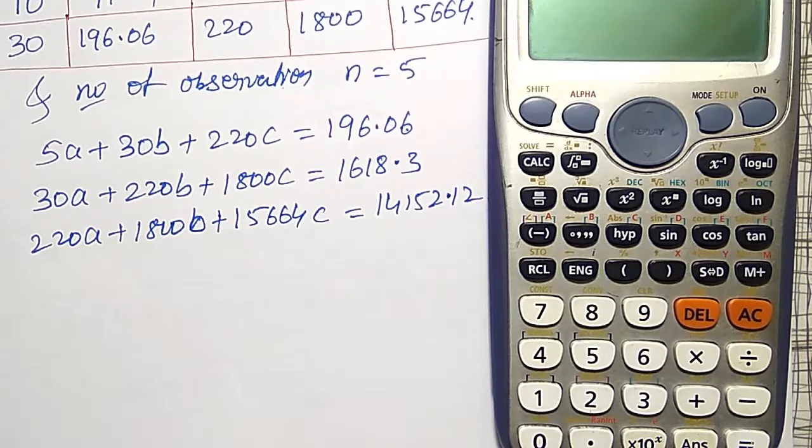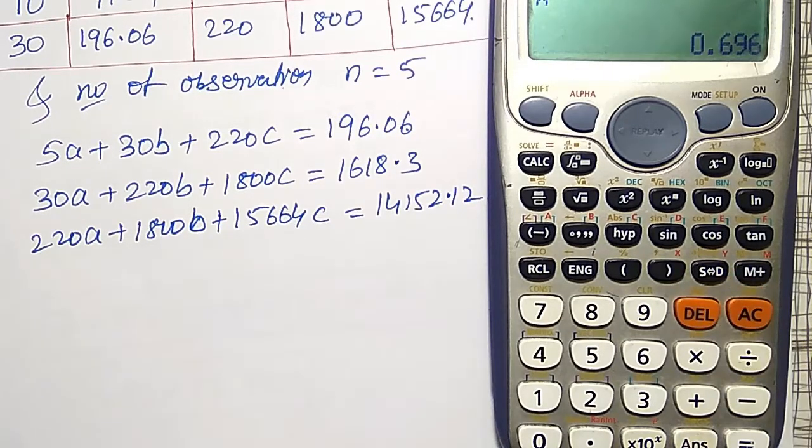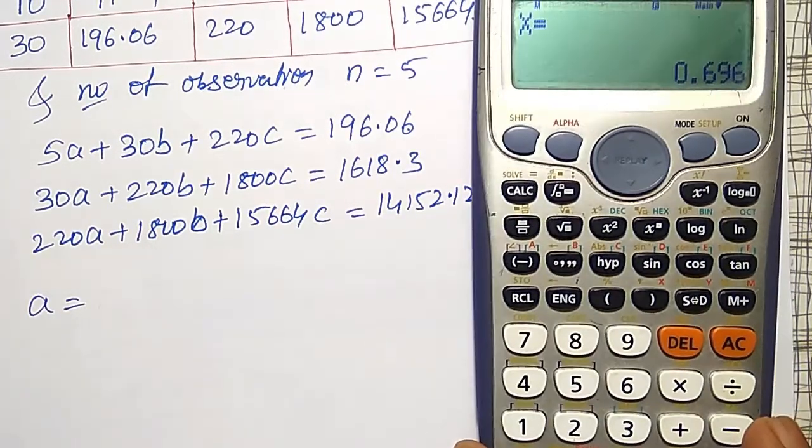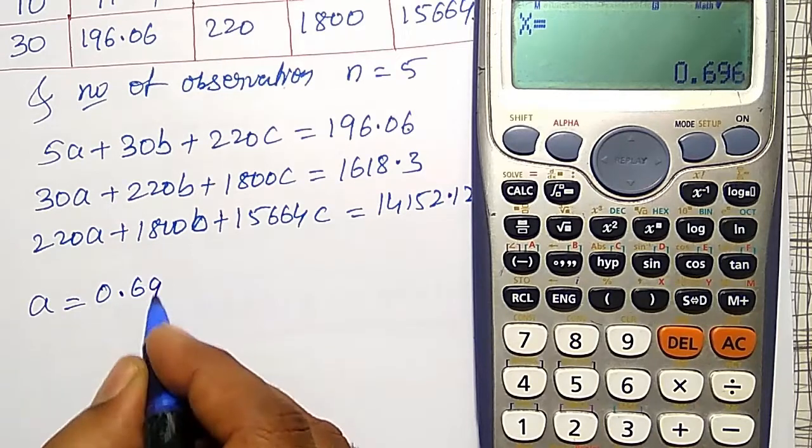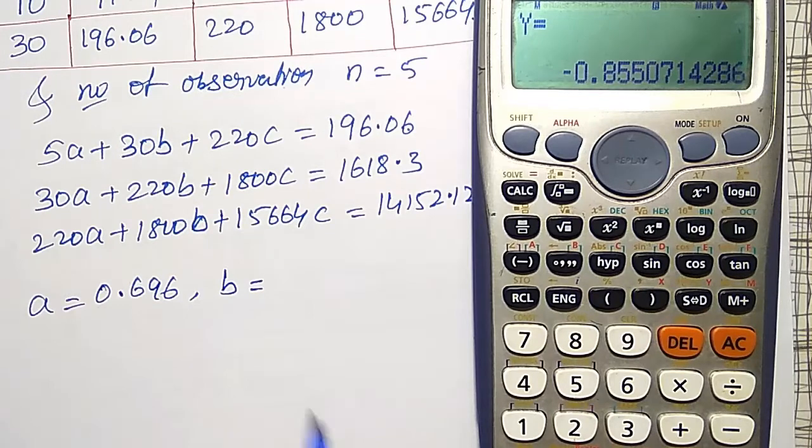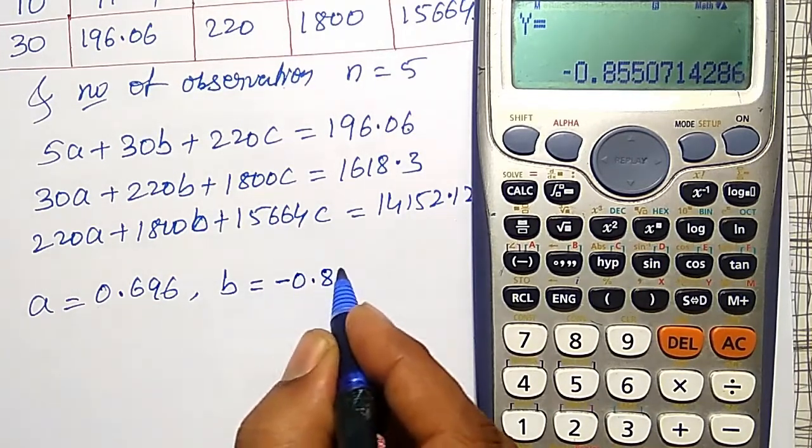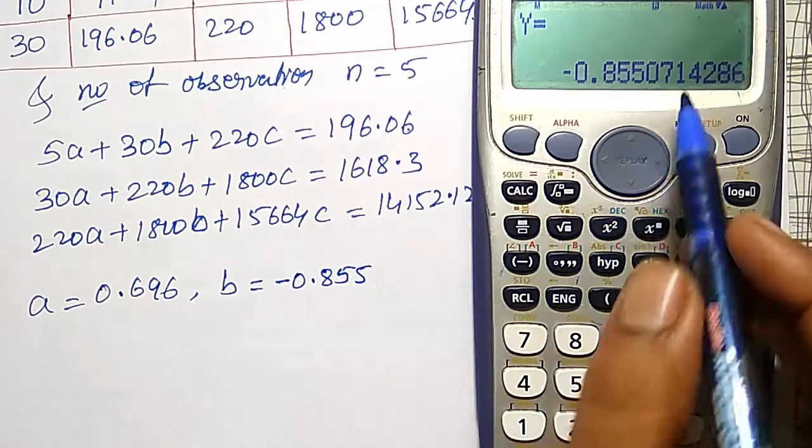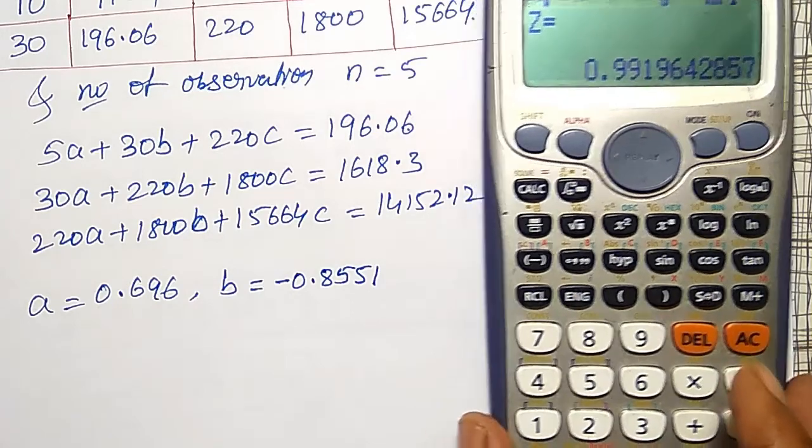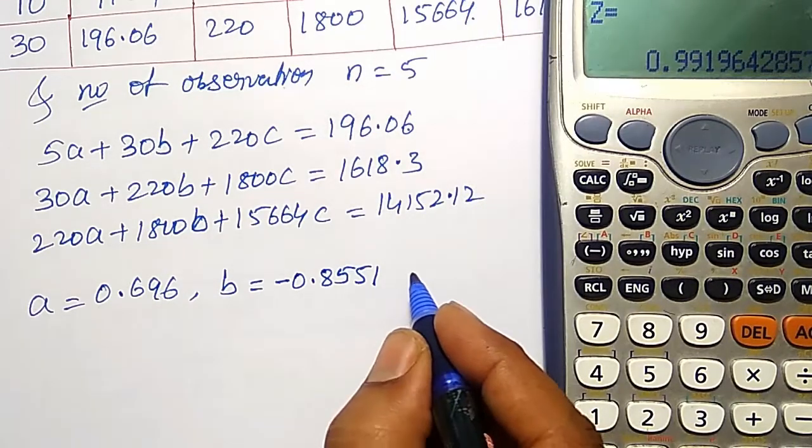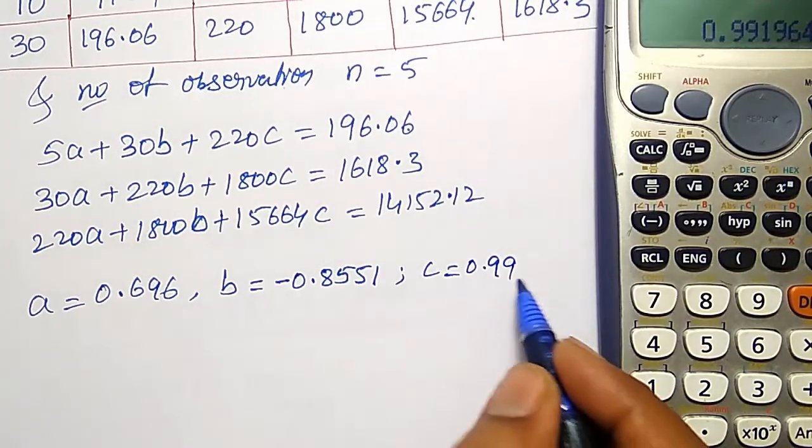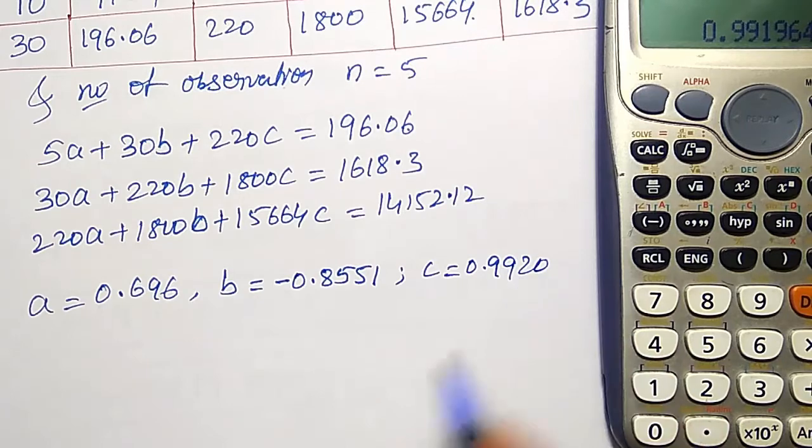Then I will get the x value in the calculator. But it is actually a value. My a value is 0.696, up to four decimal places. And next, b value, in calculator it is showing y: minus 0.8557, approximately I will take it as 8551. Then z value, that is c value, equal to 0.9920.